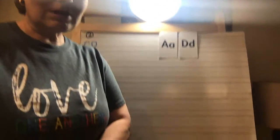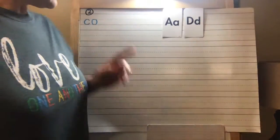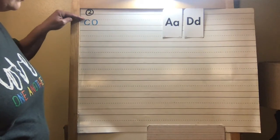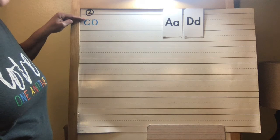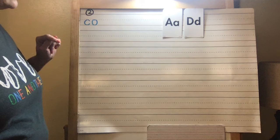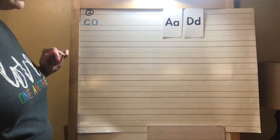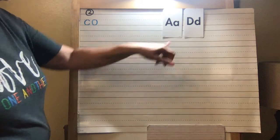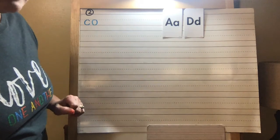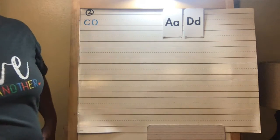Welcome back, boys and girls, to Handwriting with Ms. Brister. Last time we learned how to make the letters C and O, and we made sure that we started at the top and went around, just like a magic C, and then the O made a magic C. Well, today we're going to do the A and the D, and they're going to be also with the magic C.